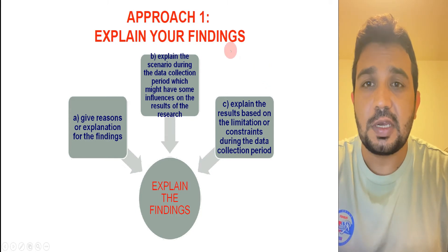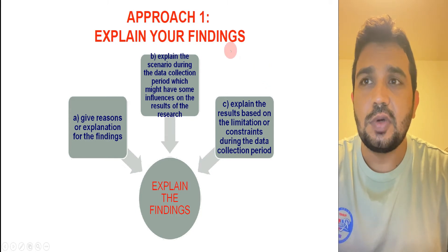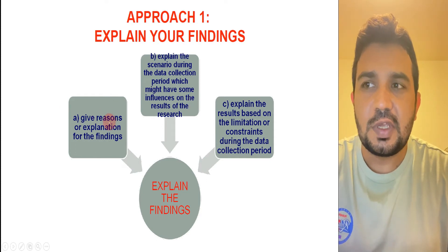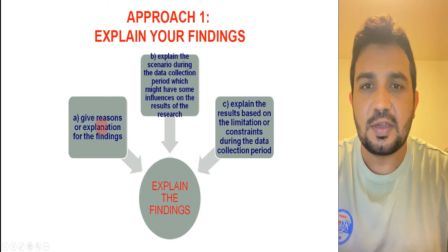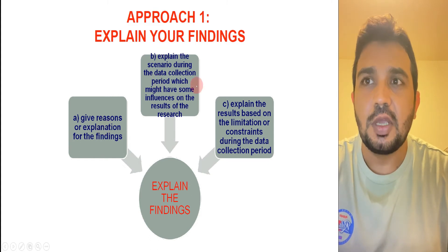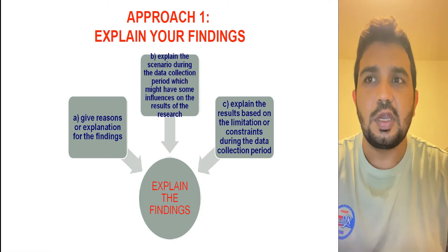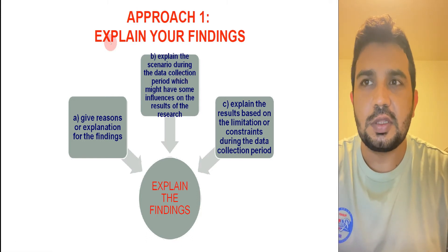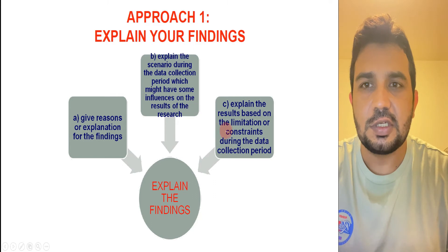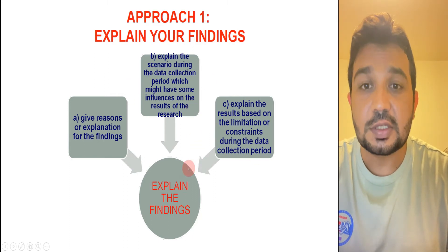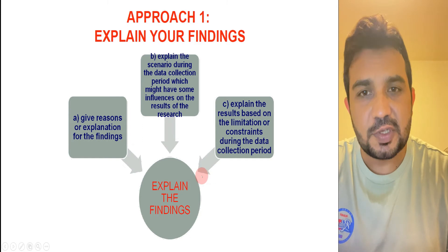In the first approach, you need to explain your findings — give reasons and explanations for why you did this experiment. You also need to describe the scenario and the different conditions during data collection and the result studies, explaining all those conditions. That would be your first part.